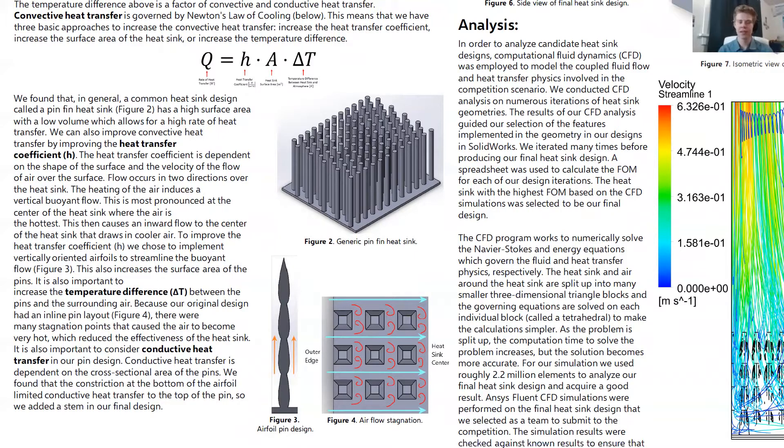Because our original design had an inline pin layout, as shown in figure 4, there were many stagnation points that caused the air to become very hot, which reduced the performance of our heatsink. Our final design used a staggered pin layout with cylindrical cross-sections to improve this.